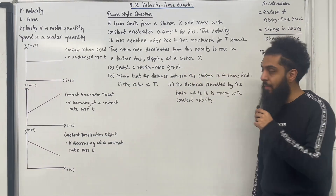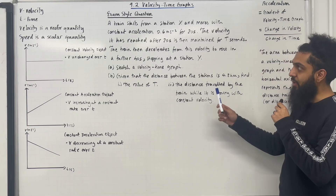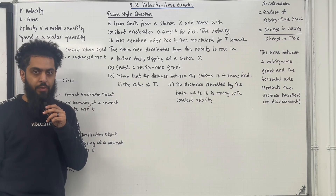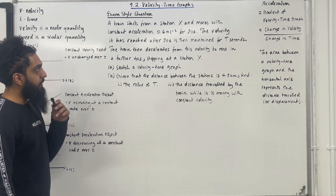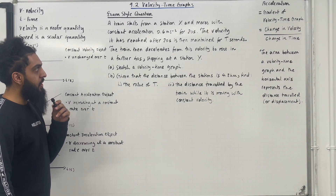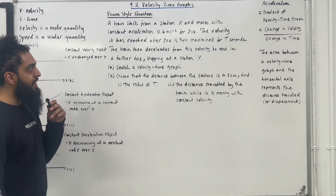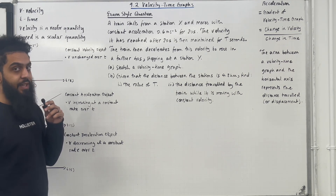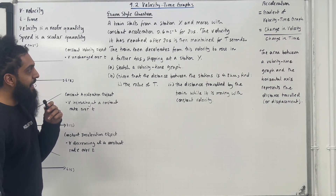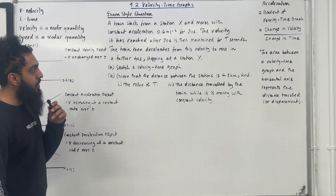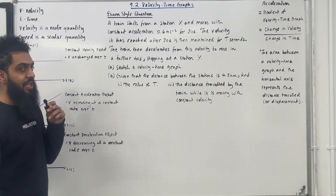I'll be implementing these key facts within this exam-style question. A train starts from station X and moves with constant acceleration 0.6 metres per second per second for 20 seconds. The velocity it has reached after 20 seconds is then maintained for T seconds. The train then decelerates from this velocity to rest in a further 40 seconds, stopping at station Y.